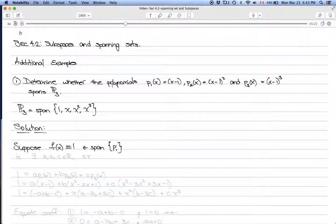What does that mean? That means there exist real numbers a, b, c such that we can write f(x) ≡ 1 as a·p1(x) + b·p2(x) + c·p3(x). Expanding that out,